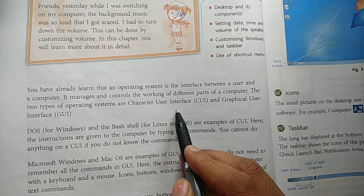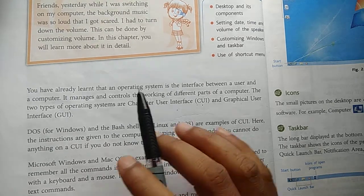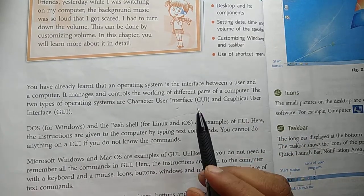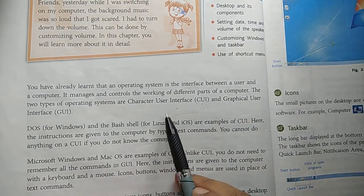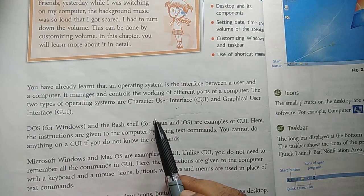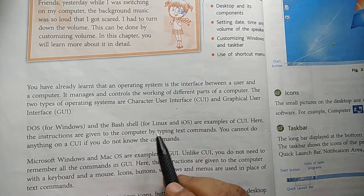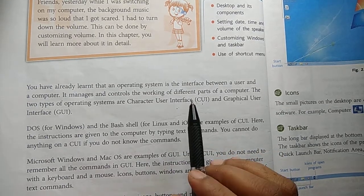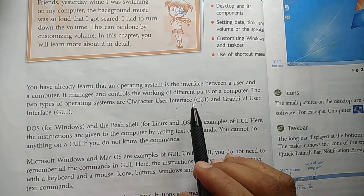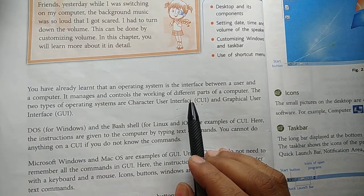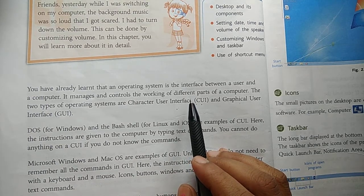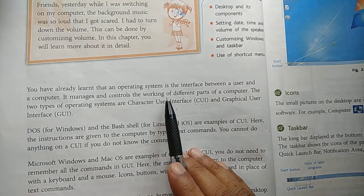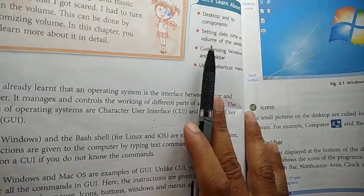Character user interface में बच्चे, जो operating system होते हैं, उसमें कोई pictures, कोई icons नहीं होता है. वो simple desktop आपको मिलेगा. उसमें just you have to type characters from the keyboard and give the command and you will get the result in character form. Character form में ही आपने instructions देने हैं, character form में ही आपको output मिलेगा. तो example है character user interface का — MS-DOS. तो हम next Windows के बारे में पढ़ेंगे, so you know Windows is a graphical user interface.